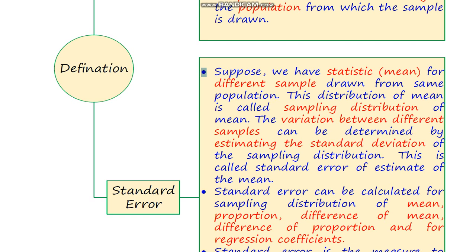Suppose we have a distribution and we draw 20 samples of equal size from this distribution. For each sample we determine the mean of the sample, so we have 20 means from these samples. Now we have a question to determine the variability among the means of these samples. We can do this by estimating the standard deviation among these means, and the whole procedure is called standard error.